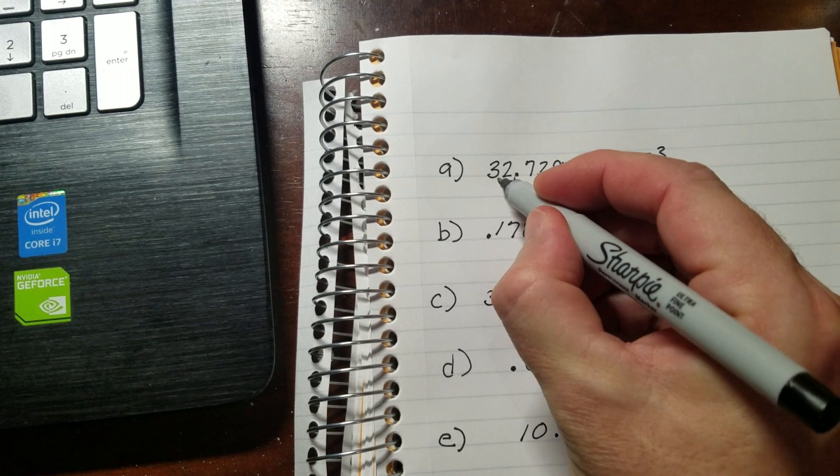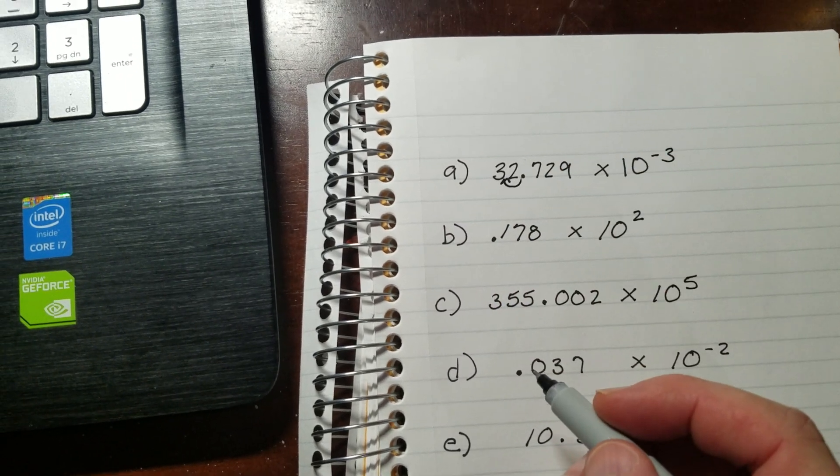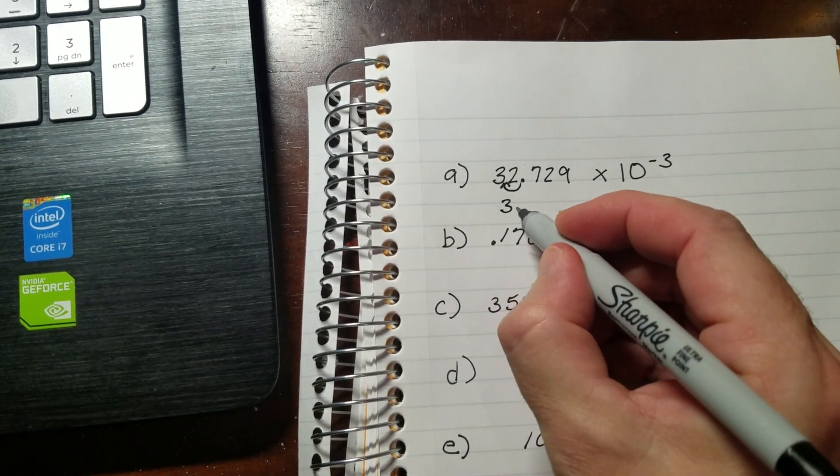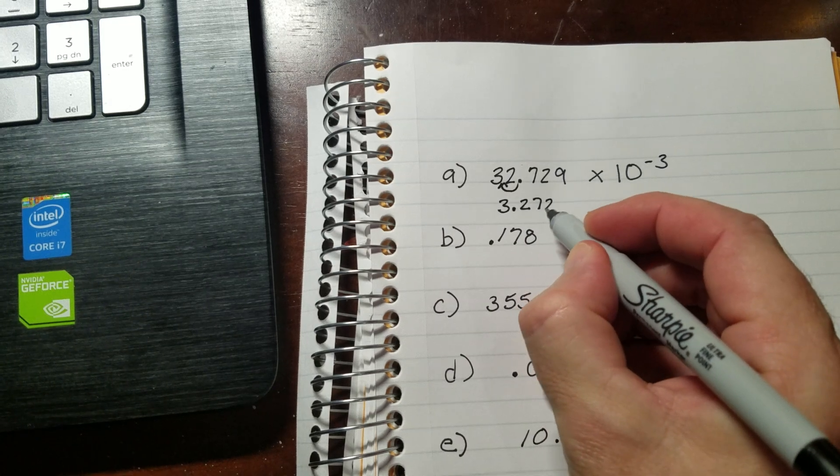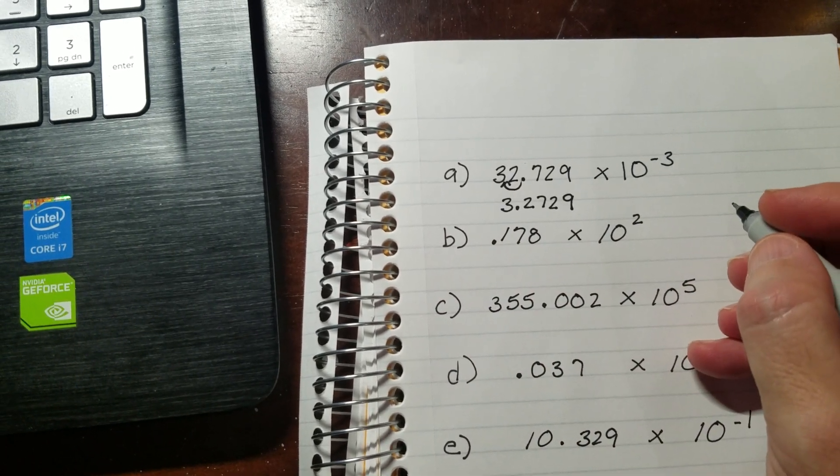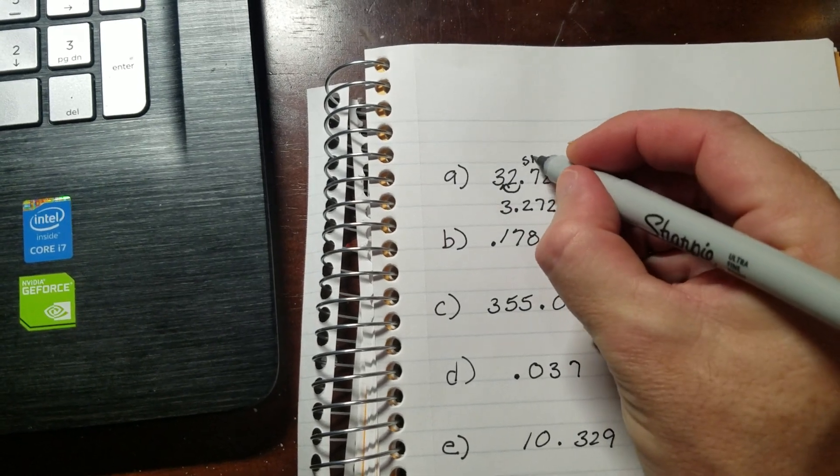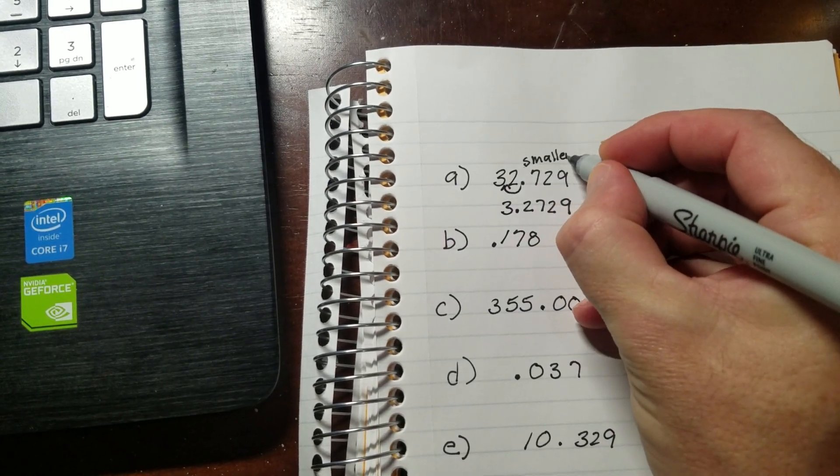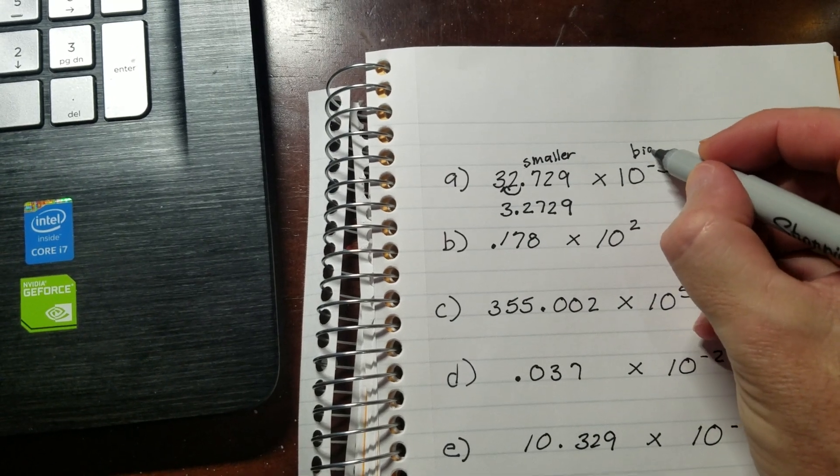So what will happen here is I will move the decimal one place to the left, which makes this 3.2729. And when I did that, I basically made this number smaller, which means that I'm going to have to make this one bigger.